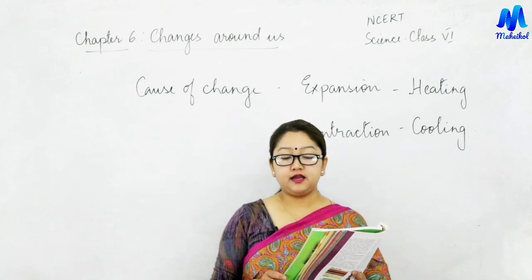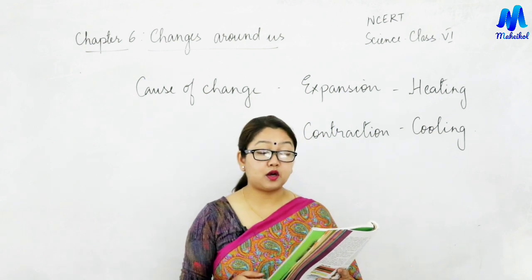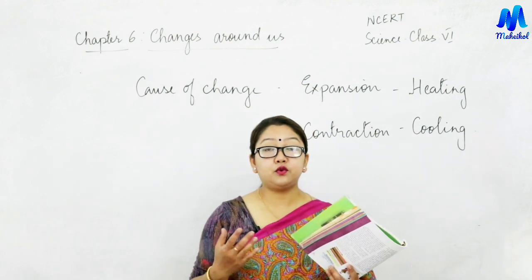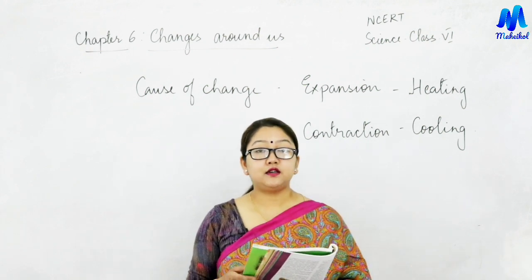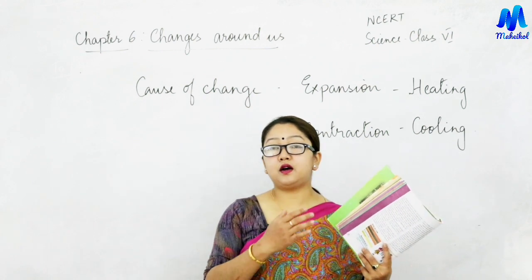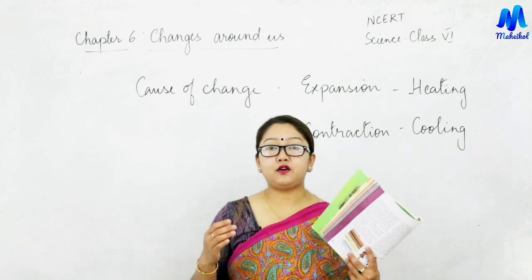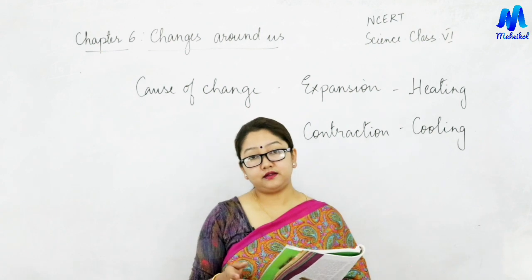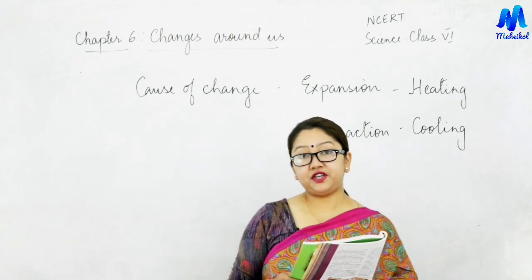Question number two asks: you accidentally dropped your favorite toy and broke it. This is a change you did not want. Can this change be reversed? This question has different answers. Those toys which are made of mud or glass — you cannot bring back the toy again. But if it is made of plastic which can be fixed using glue, you can get your toy back, though not in its original form. So this is an irreversible change.